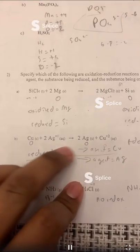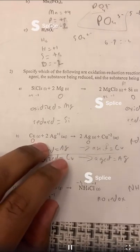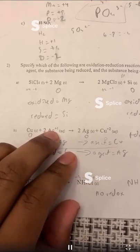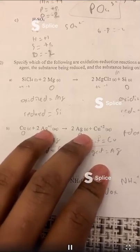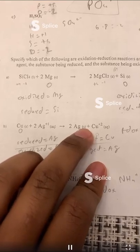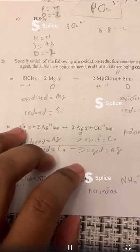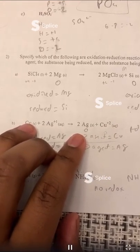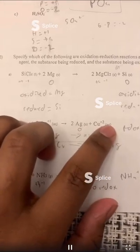So for example, in this equation, silver is being reduced because there's one over here and then a zero right here, and copper is being oxidized because it's going from no charge to a charge. For there to be a redox reaction, one has to go up and the other has to go down so it balances out.